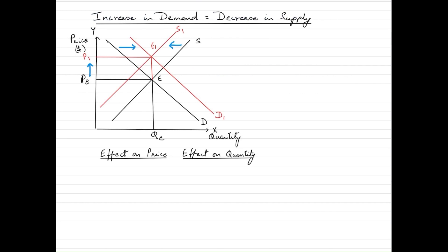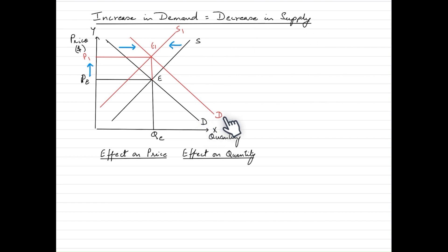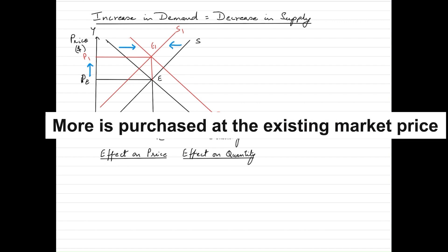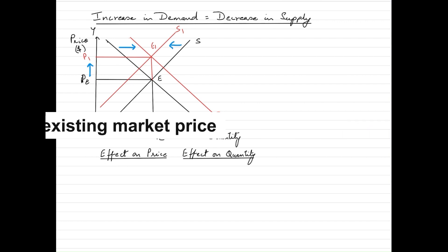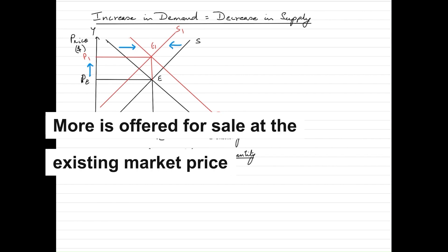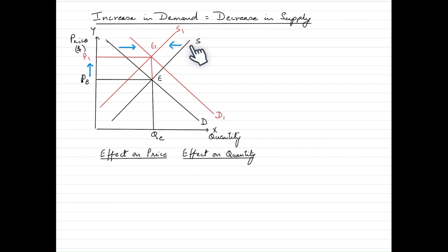This is a scenario where an increase in demand is equal to a decrease in supply. When we say an increase in demand, we can see that the demand curve is shifting to the right from D to D1. When we talk about a decrease in supply, we see that the supply curve is shifting to the left from S to S1.